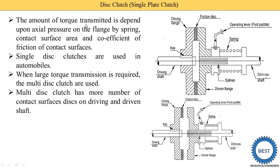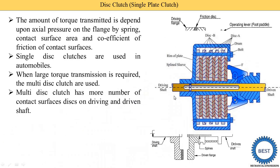Torque transmission depends on three factors: axial pressure by the spring, contact surface area, and coefficient of friction. Contact surface area is increased by increasing the number of discs — this is called multi-disc. When the friction disc count is more than one, it is called multi-disc, and the contact area is increased so more torque is transmitted. Multi-disc clutch has more contact surface discs on driving and driven shaft. Here in the diagram of multi-disc clutch, disc A and disc B are present, and increasing these discs increases contact surface area and torque transmitted. Single plate clutch is used when less torque is required; when higher torque transmission is required, multi-plate clutch is used instead.